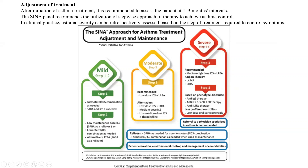Moving into step four, consultation with an asthma specialist is indeed recommended - if not required. You should consult an asthma specialist in step three, and if you don't consult one in steps four or five, you bear full responsibility. The recommended options at step four include medium to high dosage of inhaled corticosteroids, increasing from the low dose used previously.